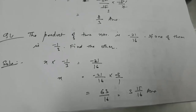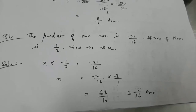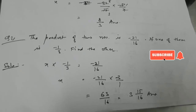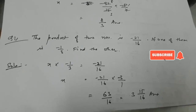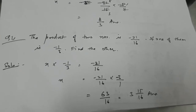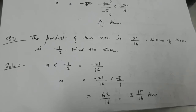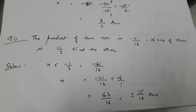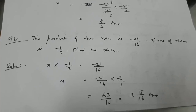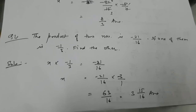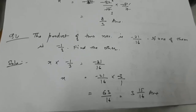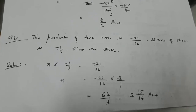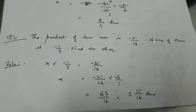In question number 11, the product of two numbers is given as minus 21 by 16, and one number is given as minus 1 by 3. We have to find the other number. According to the question, x into minus 1 by 3 equals minus 21 by 16. So x equals minus 21 by 16 into minus 3 by 1. The answer is 63 by 16, that is 3 whole number 15 by 16.